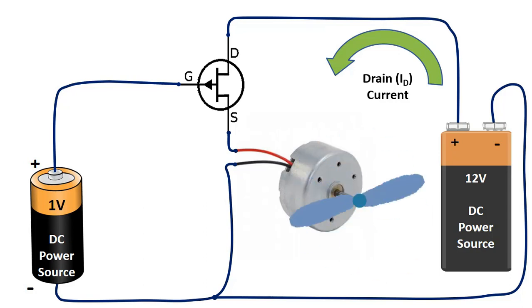Here you can see that the voltage source connected between gate and source is 1V. In this way, a current flows between drain and source. With this current, our motor rotates at a certain speed.